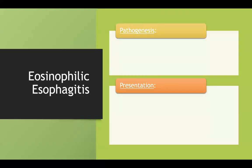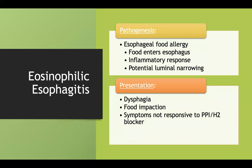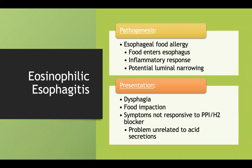Let's talk about autoimmune esophagitis. Eosinophilic esophagitis is basically a food allergy for your esophagus. You eat food, have an inflammatory response due to that allergic reaction, and that can cause luminal narrowing. This presents with dysphagia and food impaction. A key testing point is that it won't respond to a PPI or an H2 blocker — because this isn't an acid problem, it's a food allergy, so those medications would have no effect.